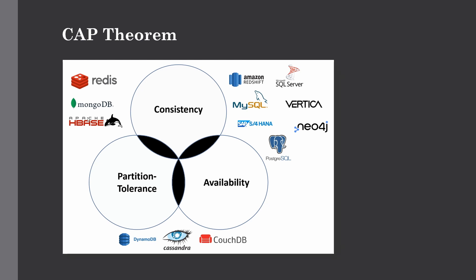Apache HBase, MongoDB, and Redis are NoSQL databases with high consistency and partition tolerance, but they are not always available. HBase has a master node — the HMaster — which can go down, and due to its master-slave architecture it is less available than other options. On the other side of the triangle, DynamoDB, Cassandra, and CouchDB have partition tolerance and availability but lack strong consistency. It comes down to what you need: if you need a highly available system with no downtime, choose Cassandra or DynamoDB. If you need a highly consistent system, choose Apache HBase or MongoDB.